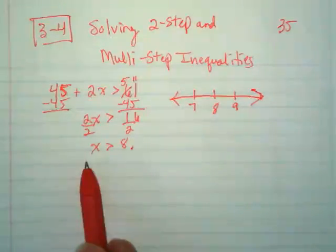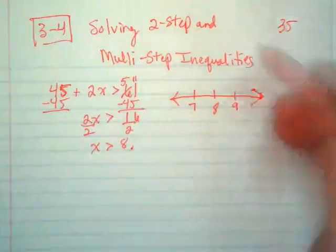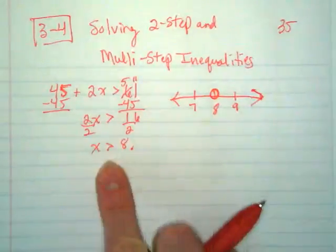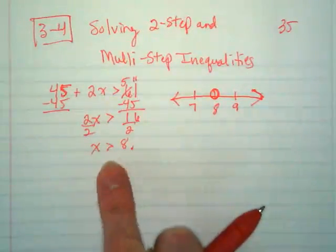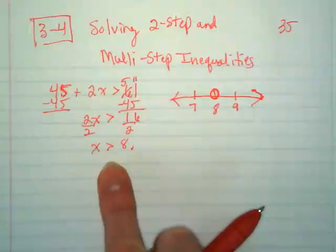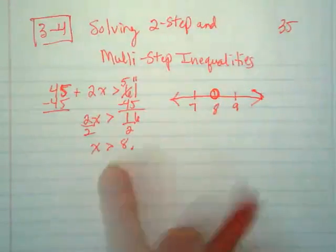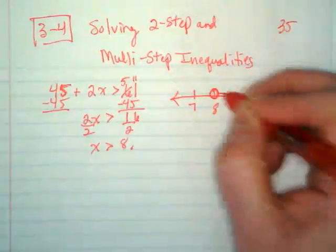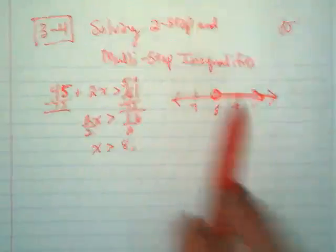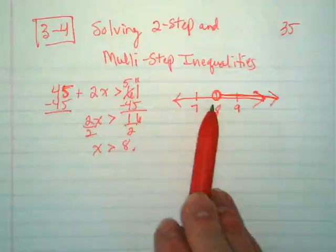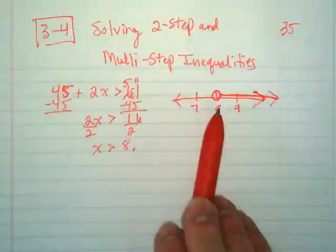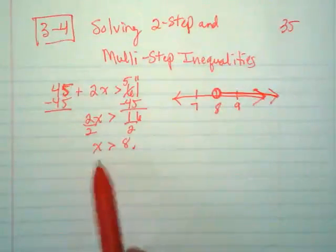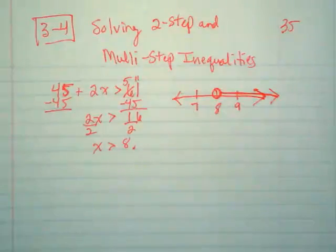Before I graph it, I want to make sure that the variable's on the left side. I'm going to circle the number that the variable is greater than or less than. In this case, it's greater than. Make sure I know if it's an open or closed circle, and in this case, it is open. And which direction is the line going? That's saying 8 will not make this true, but anything bigger than 8 will make it true, including 8.1. Anything bigger than 8 is going to make this true.